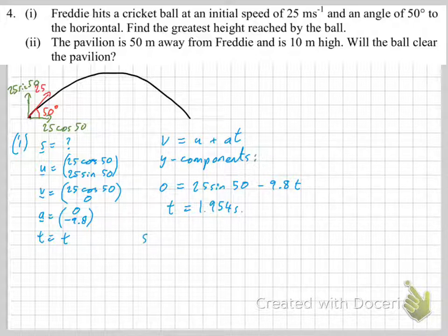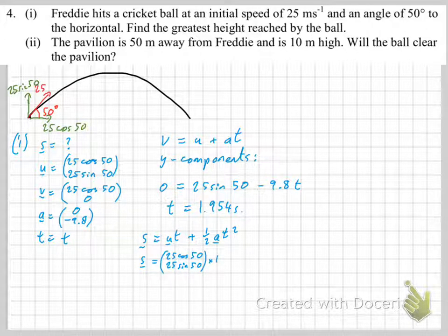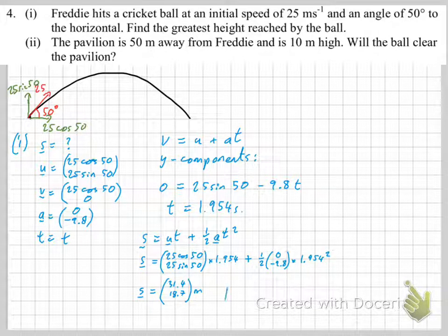Now we know T, we can use S equals UT plus one half AT squared. Remember to use both components here — you often need the other one later on. Substituting everything in, you get 31.4 metres horizontally and 18.7 metres vertically. So the answer to 'what's the greatest height' is 18.7 metres.